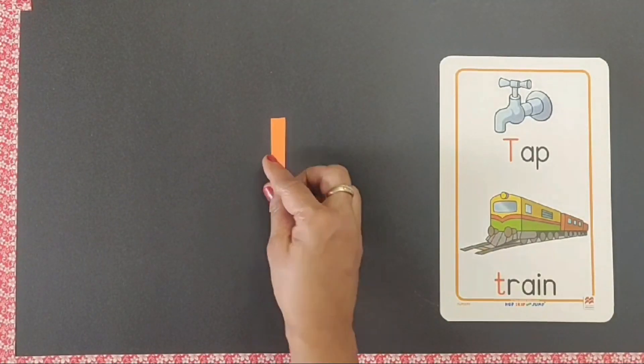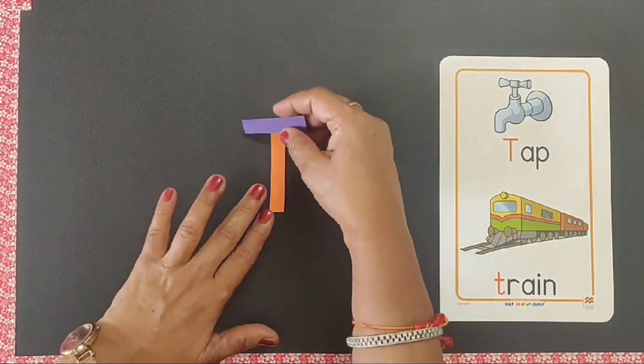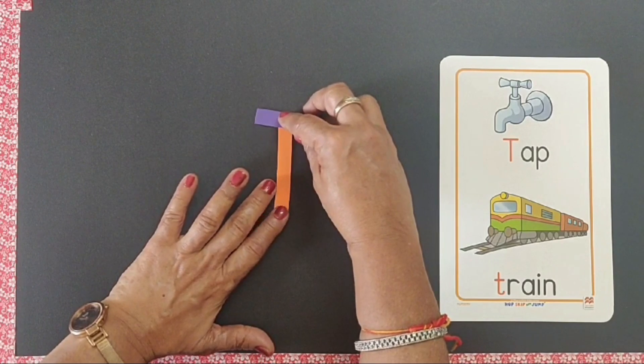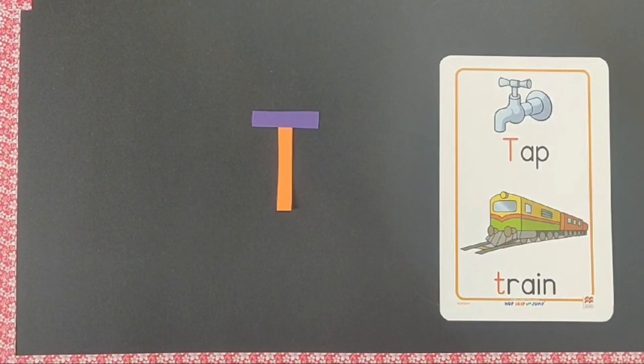Now take a big strip, a small one like this. T. T says tuh, T for tap.